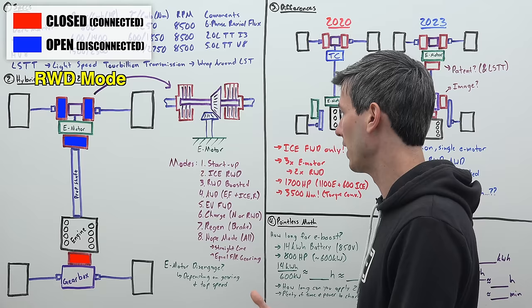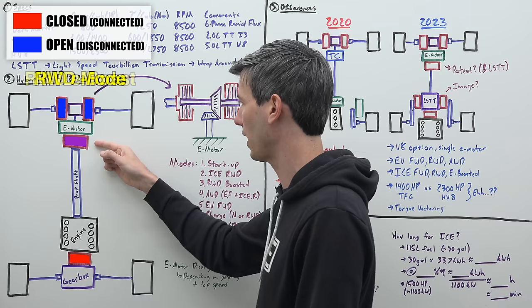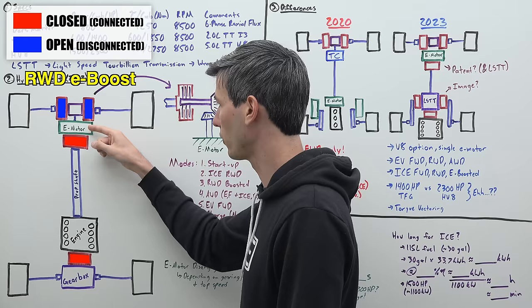If we want to use the electric motor for assistance for those rear wheels, we can. We simply engage this clutch, we're leaving these open and we're using the electric motor to assist the engine sending power through that rear gearbox to the rear wheels.